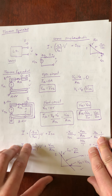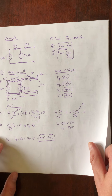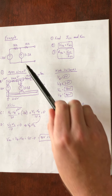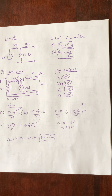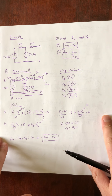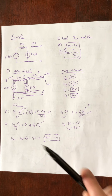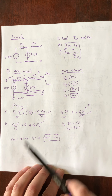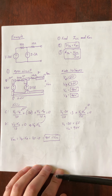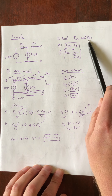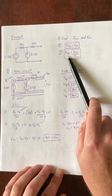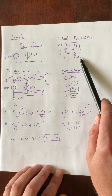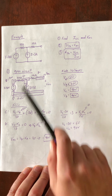Let's do an example to make this clearer. We want to turn a source network into a Thevenin equivalent. The steps are: first, find ISC and VOC — the same thing we'd do to find the IV characteristic of the source. Then use our equations: V Thevenin equals VOC, and R Thevenin equals VOC over ISC. Let's start with the open circuit solution.